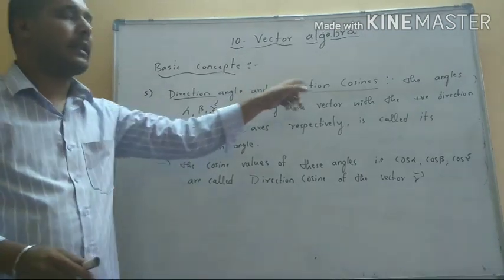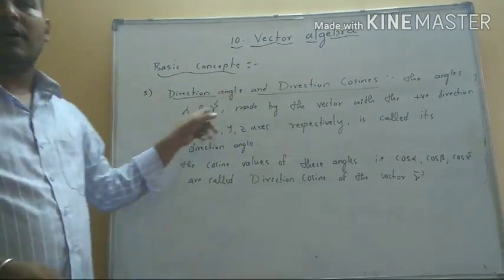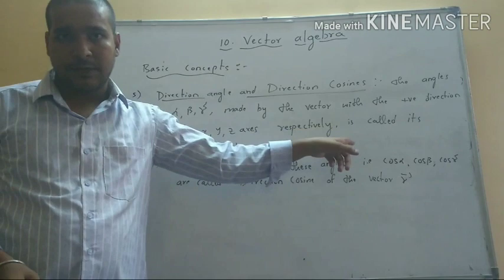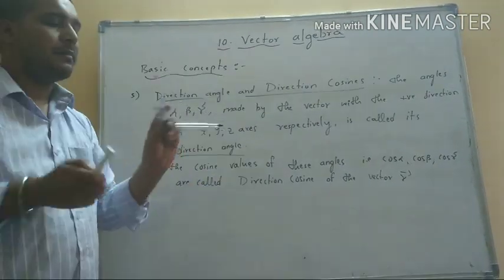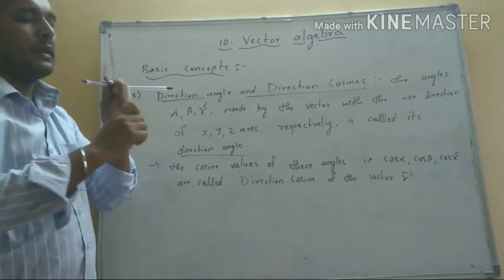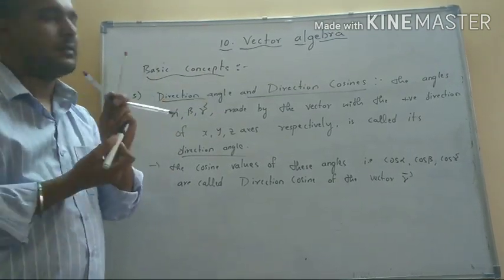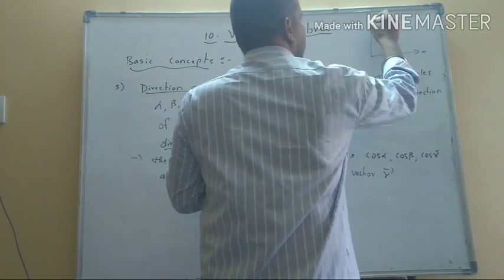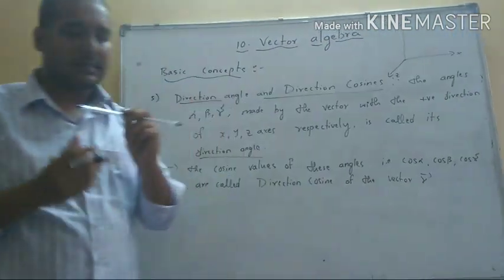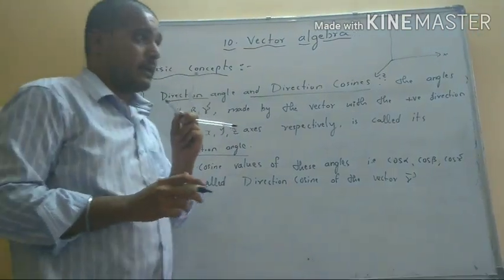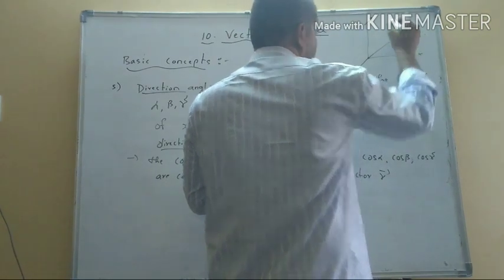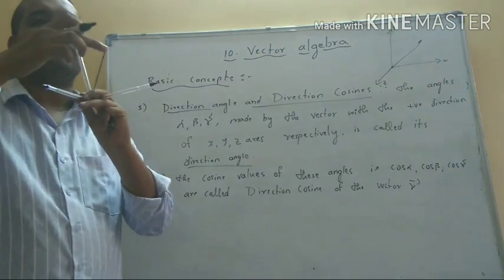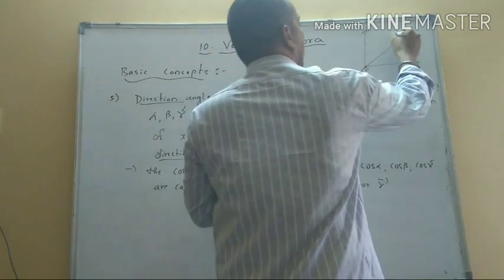Next topic: direction angles and direction cosines. The angles alpha, beta, gamma made by the vector with the positive direction of the x-axis, y-axis, z-axis respectively are called direction angles. This is the x-axis, y-axis, z-axis. The position of a vector — the OP vector — makes angles with these three axes.